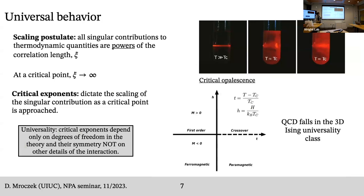Please interrupt me if you have questions — my least favorite thing is talking to myself. In terms of a critical point, there's a very nice property of universality. The scaling postulate — one of the guiding principles of the theory of critical phenomena — states that all singular contributions to thermodynamic quantities are powers of the correlation length. At a critical point, the correlation length in your system diverges. When you're at a critical point, you have universal quantities called critical exponents, which dictate how the scaling of different thermodynamic observables happens as powers of the correlation length.